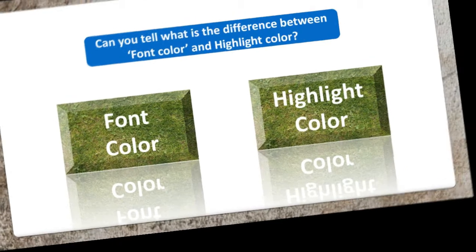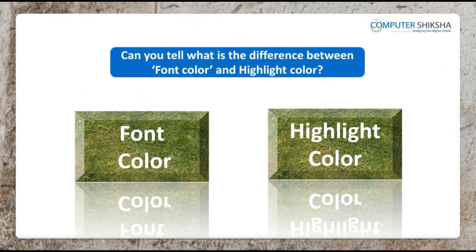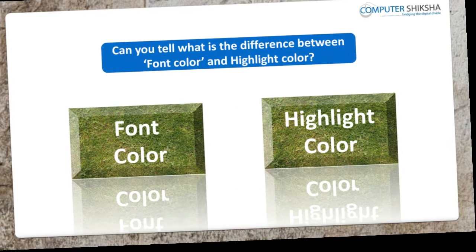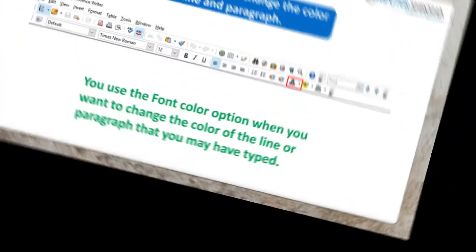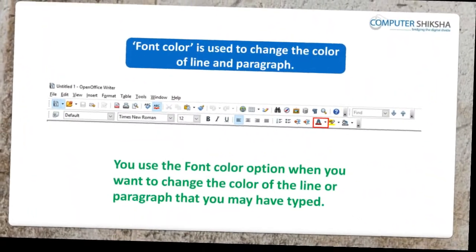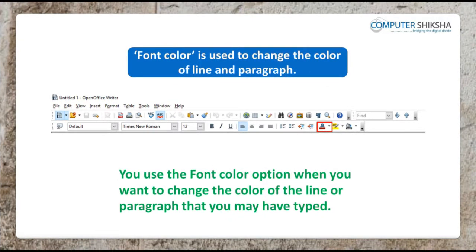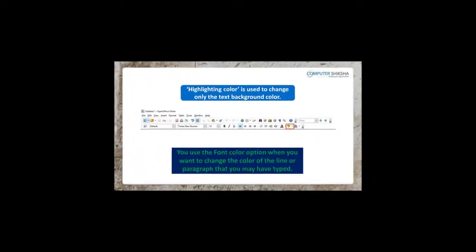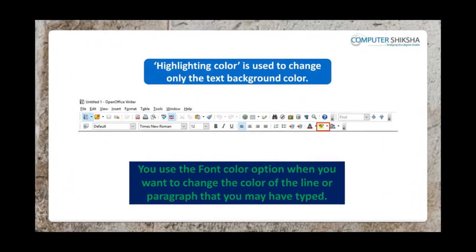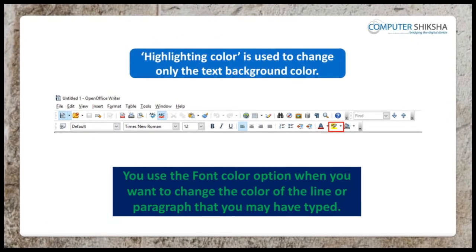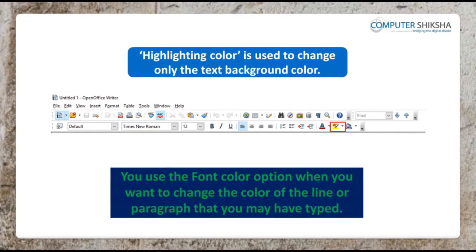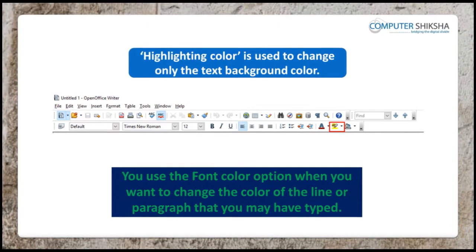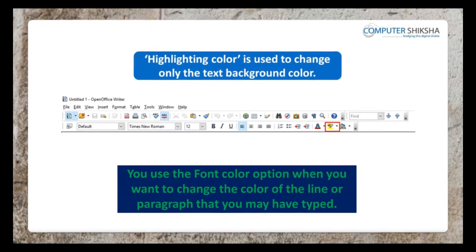Can you tell what is the difference between font color and highlighting color? You use the font color option when you want to change the color of the text or paragraph that you have typed. In case you want to change the color appearing behind the text on your page, you will use the highlighting color option. The highlighting color option changes only the text background color, not the text itself.